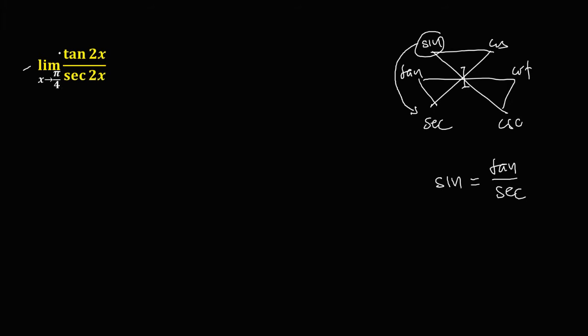from this given, we can rewrite this tangent 2x over secant 2x as sine 2x.